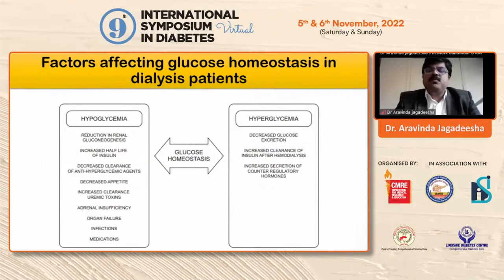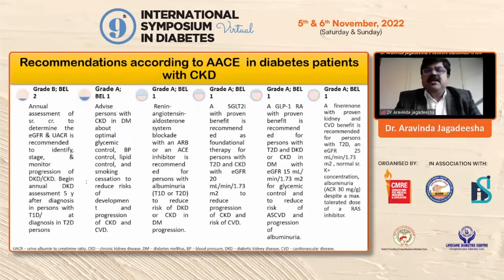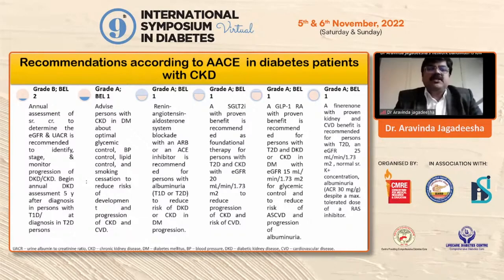An important point: two conditions that may occur dramatically in diabetes with CKD are hypoglycemia and hyperglycemia. Because of reduced renal clearance, these can profoundly create problems. Always keep educating the patient regarding both hypoglycemia and hyperglycemia. The recommendation is to monitor eGFR and UACR to prevent the progression of diabetes with CKD.